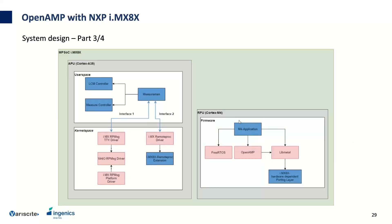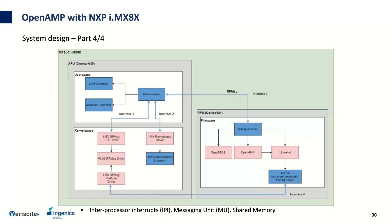On the Cortex-M4 side, I implemented an M4 application using the FreeRTOS middleware, the OpenAMP middleware, and the libmetal middleware used by OpenAMP. Inside libmetal I had to implement the IMX8X hardware-dependent porting layer, defining the shared memory regions and IPIs to create IPC between the two processors. After implementation on both sides, I created an RPMsg connection on the software interface and used inter-processor interrupts (IPIs) via messaging units to notify the other processor when a new message is placed in shared memory.